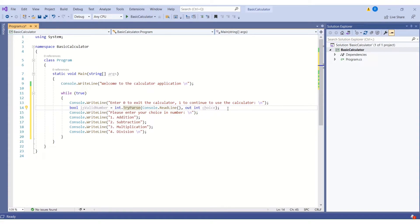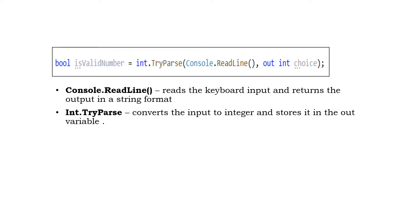Here is the statement that reads the user's choice. First, the Console.ReadLine method reads the input the user has entered on the keyboard. The input is in string format, but we want it in integer format so we can continue with our logic. That is why we use the TryParse method, available in the integer class. This method takes the string input, converts it to an integer value, and stores it in the out variable, which we have named 'choice'. One more benefit of TryParse is that it will also check for exceptions.